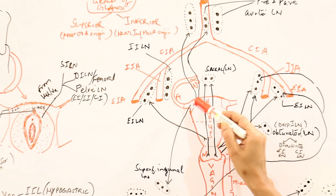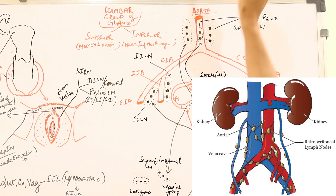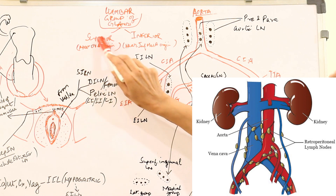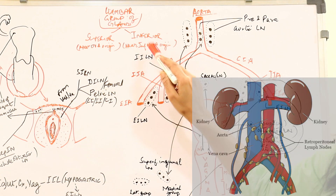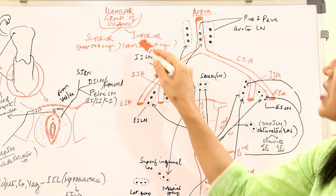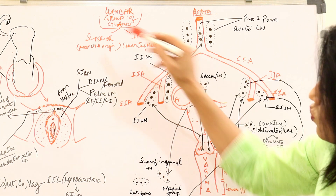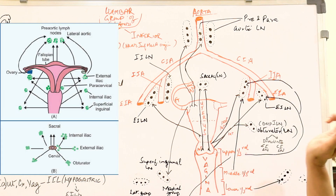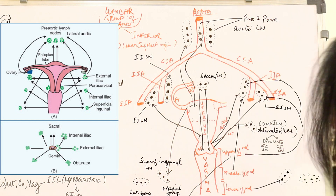Starting with fallopian tube and ovaries — there is a lumbar group of lymph nodes located on top of the aorta. The superior group runs along the ovarian artery, so lymphatic drainage from the ovary and fallopian tube goes into the superior group of the lumbar lymph nodes. The inferior group is on the inferior mesenteric artery and is not relevant for genital organs.